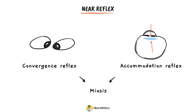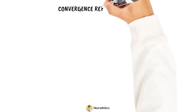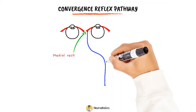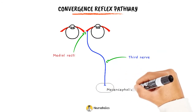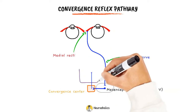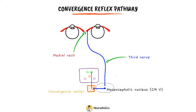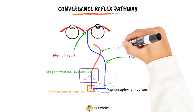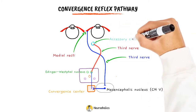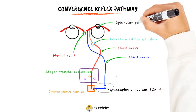Convergence, accommodation, and miosis are the three near reflexes. Let's start with the convergence reflex pathway. The afferent starts from the medial recti. This travels centrally via the third nerve to the mesencephalic nucleus of the fifth nerve. From here, the impulses travel to the convergence center in the tectal or pre-tectal region. Internuncial fibers from the convergence center then go to the Edinger-Westphal nucleus. The efferent pathway is along the third nerve, similar to that of the light reflex. From the third nerve, efferent fibers of the convergence reflex relay in the accessory ciliary ganglion and from there reach the sphincter pupillae.